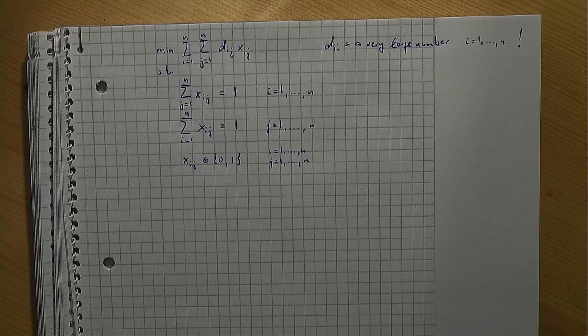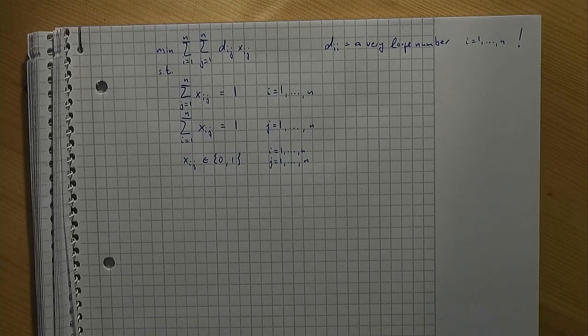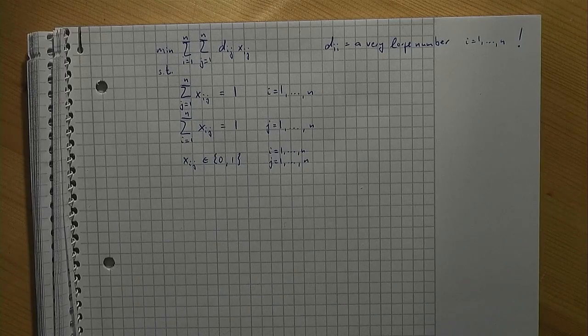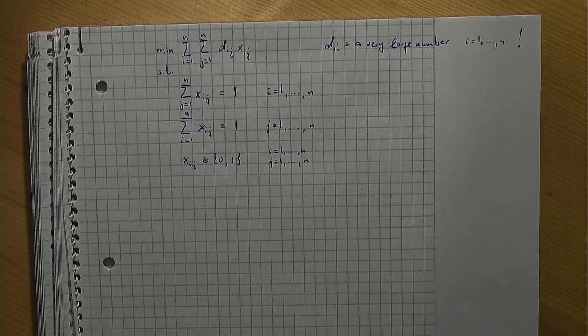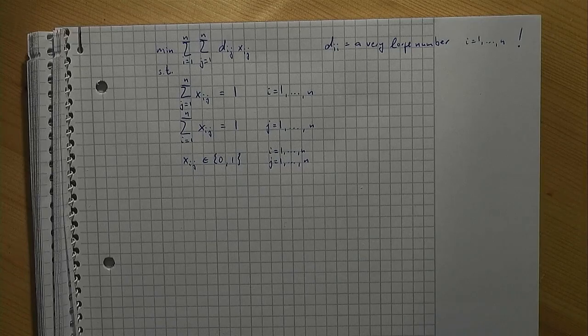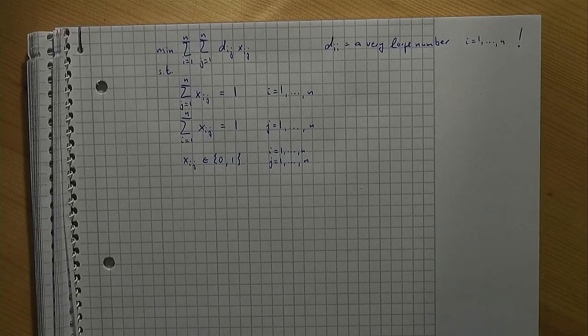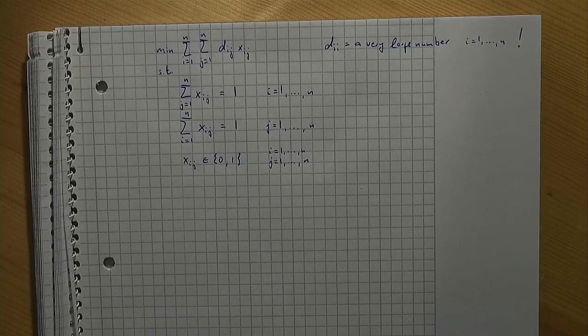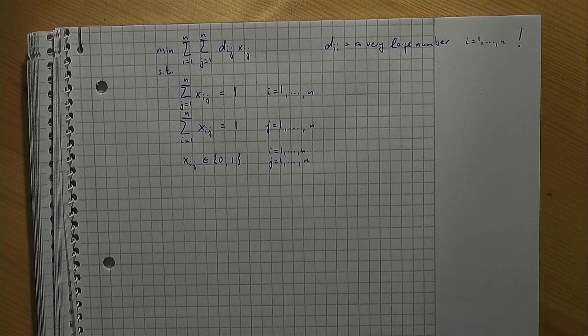Recall again that dii is assumed to be a very large number and because of that the objective function causes xii to be zero in an optimum solution. Think about how an optimum solution of the model given here would look like if we had dii equal to zero and positive distances otherwise. Pause the video now to find out by yourself.